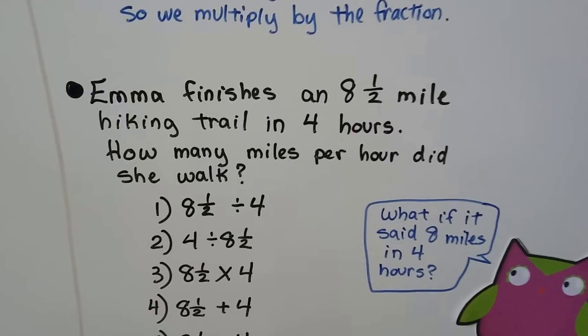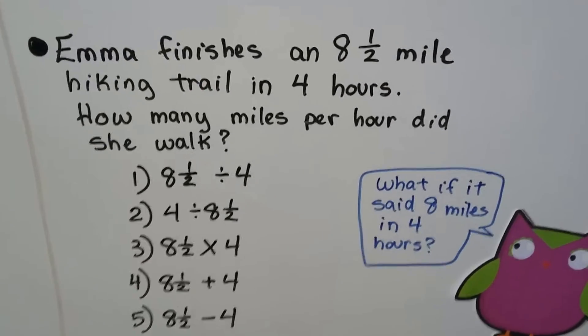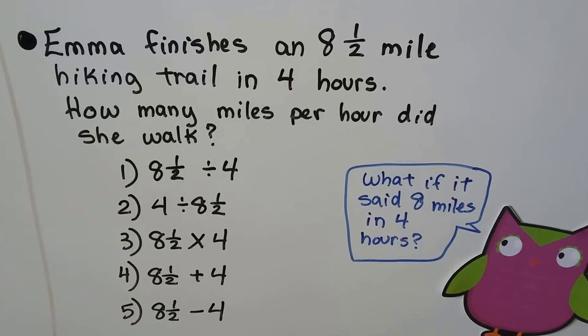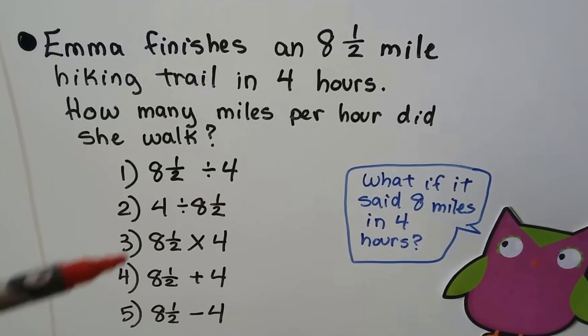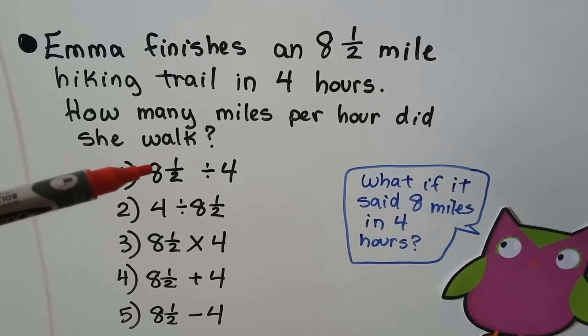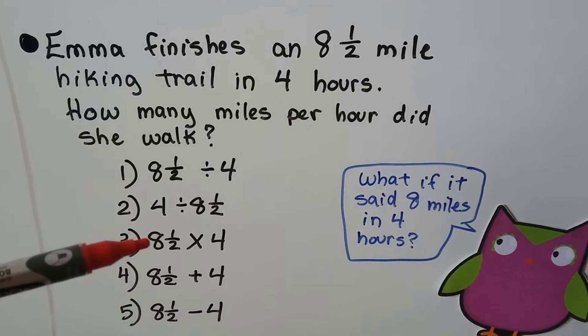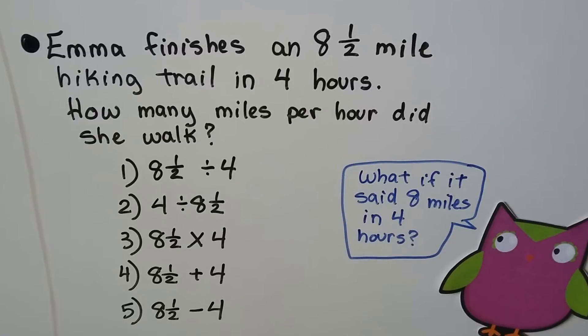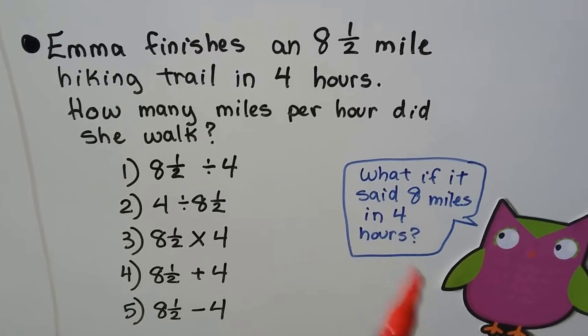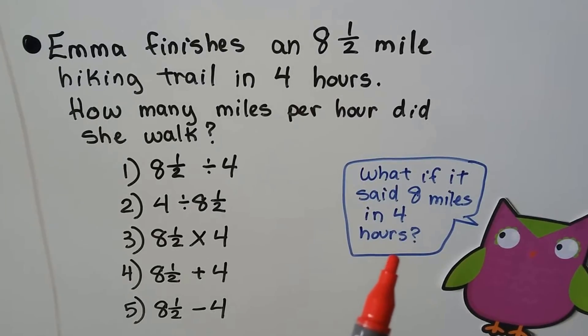How about this? Emma finishes an eight and a half mile hiking trail in four hours. How many miles per hour did she walk? Are we going to divide the eight and a half by four or the four by the eight and a half? Are we going to multiply the two numbers together? We're going to add the two numbers together, or subtract? So what if it said eight miles in four hours? Would that help your brain figure this out for the operation?